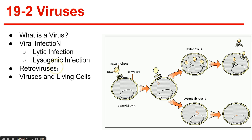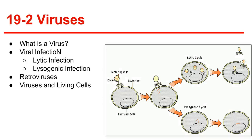Retroviruses are viruses that contain RNA as their genetic material. An example of a retrovirus is AIDS, and these can lie dormant for varying lengths of time. The relationship between a virus and a living cell is parasitic — the virus feeds off of the living cell. Viruses are at the borderline of living and non-living things and are not really classified as alive or dead.